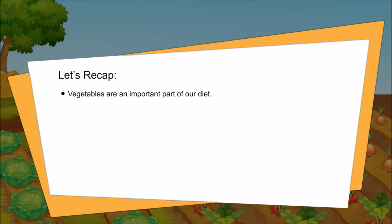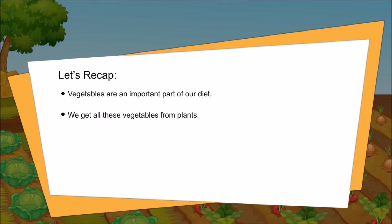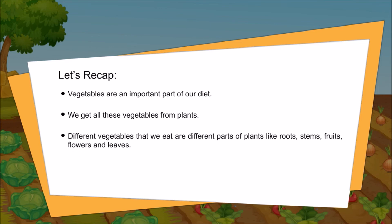Let's recap. Vegetables are an important part of our diet. We get all these vegetables from plants. Different vegetables that we eat are different parts of plants, like roots, stems, fruits, flowers, and leaves.